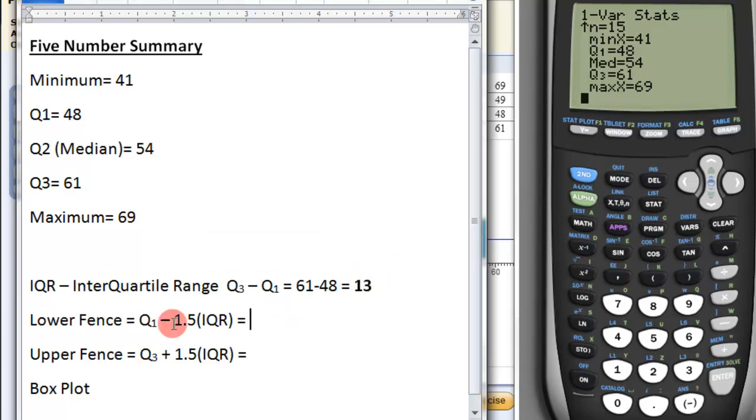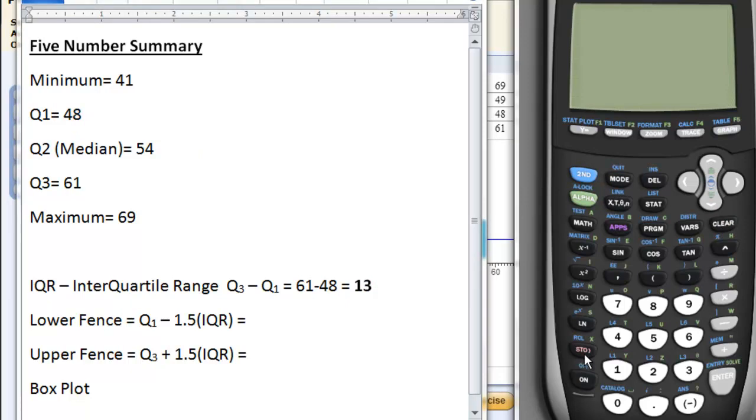Lower fence, quartile 1 minus 1.5 times the interquartile range. So we'll go over here and clear this out. Quartile 1 is 48, minus 1.5 times the interquartile range, which is 13.